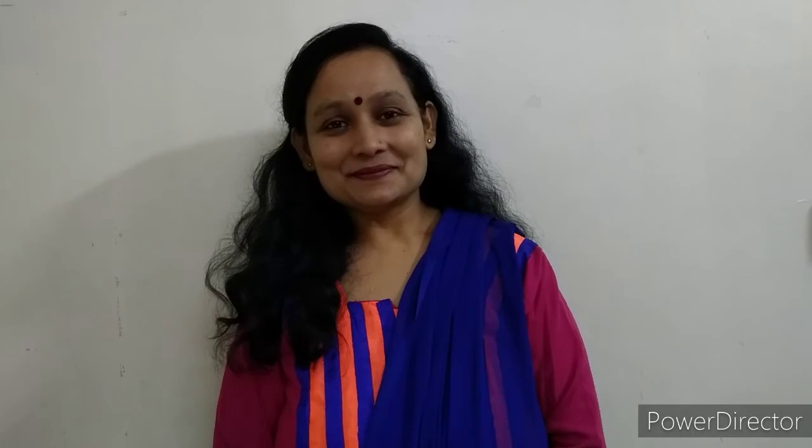अब वर्कशीट टाइम. आप सबने वर्कशीट कम्प्लिट की. In this worksheet, you had to identify the object and color it. See my worksheet, children. I had colored the picture of orange with orange color and green color. देखो बच्चों, यहाँ मैंने ओरेंज कितने अच्छे से color किया है. आपने भी ऐसे किया है ना? Color बाहर तो नहीं जाने दिया. Very nice. Clap for yourself.